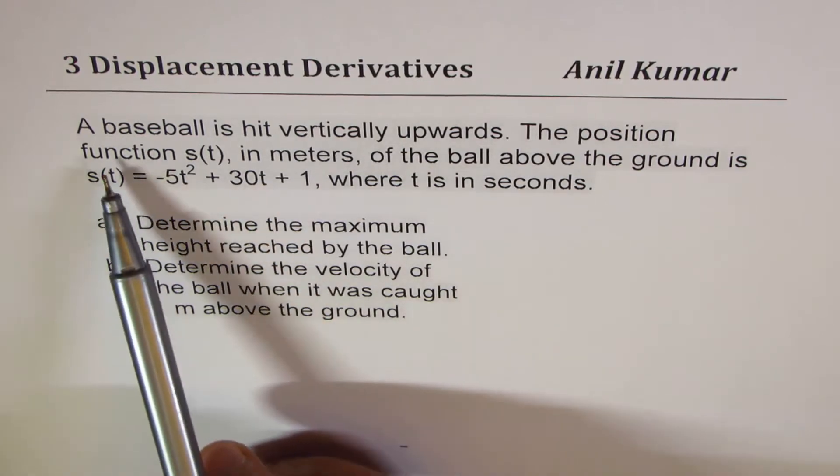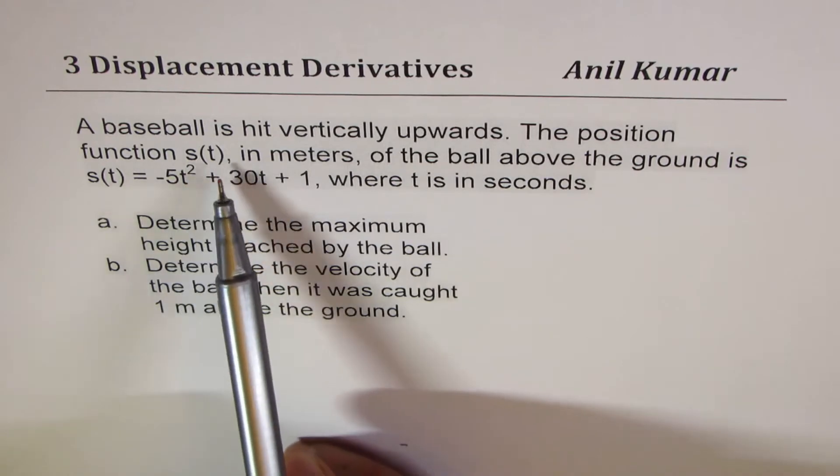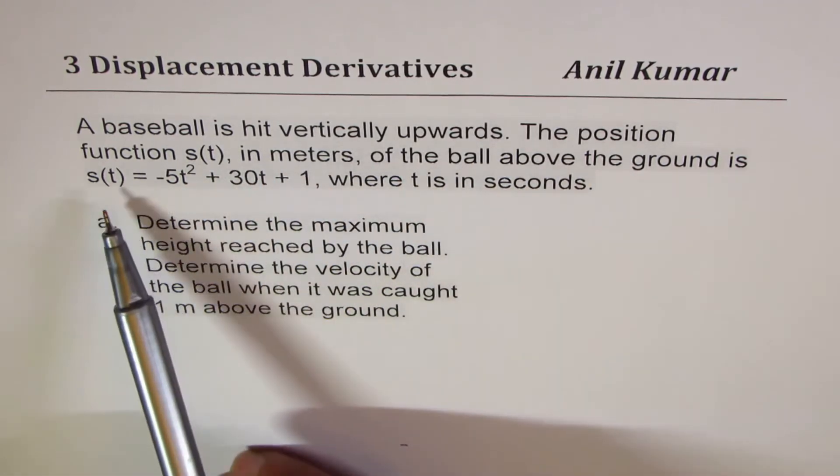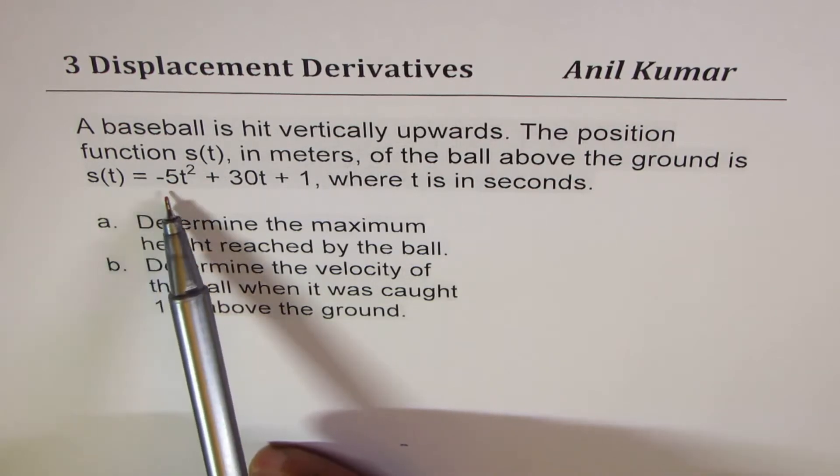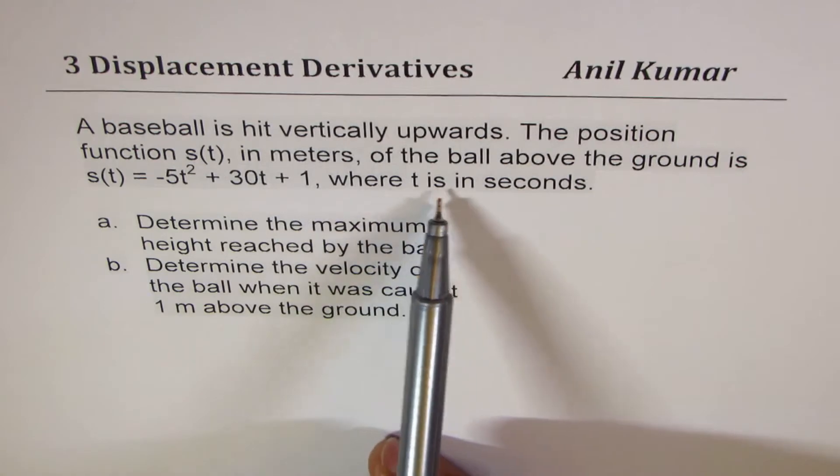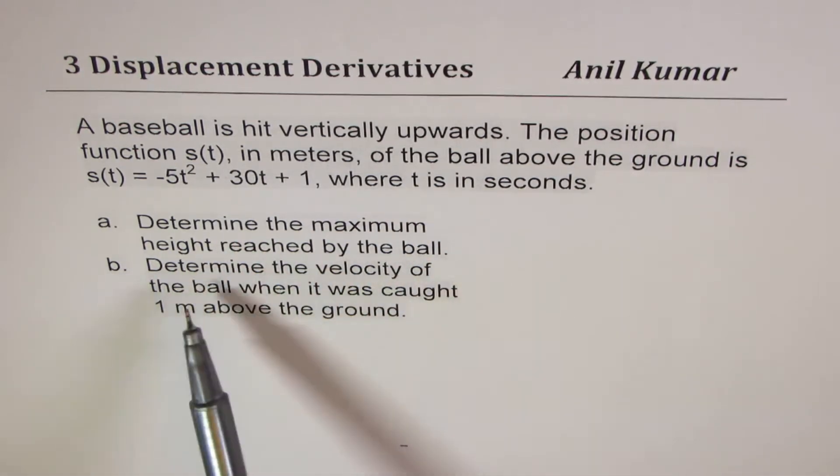The question here is: a baseball is hit vertically upwards. The position function s(t), in meters, of the ball above the ground is s(t) = -5t² + 30t + 1, where t is in seconds. Determine the maximum height reached by the ball. Determine the velocity of the ball when it is caught 1 meter above the ground.